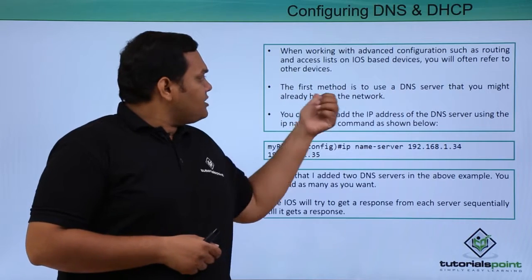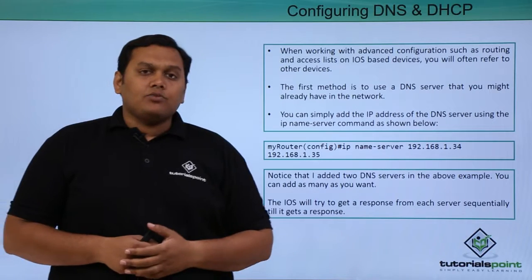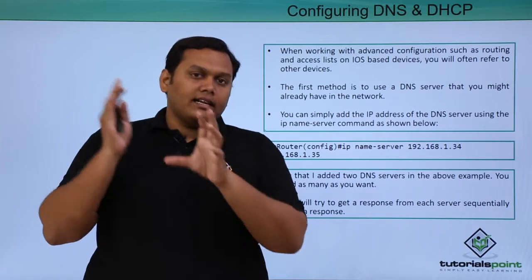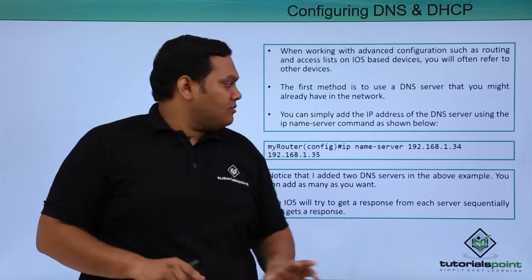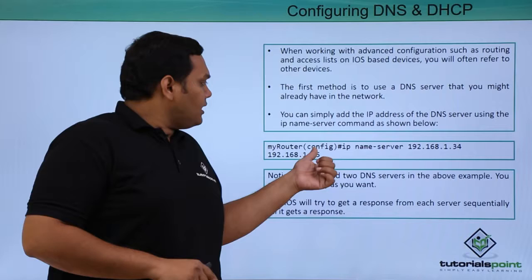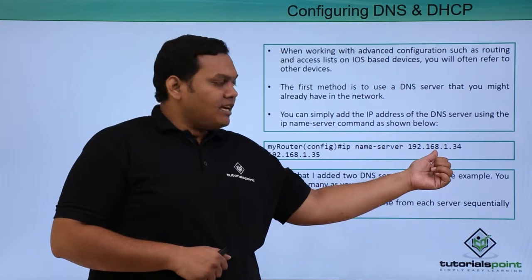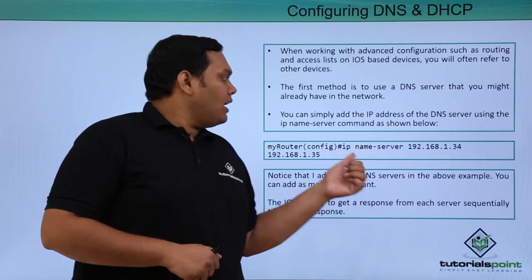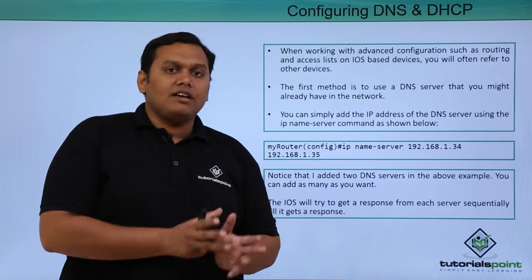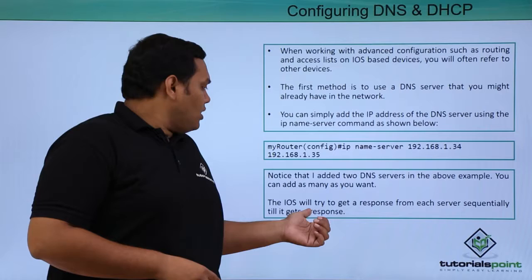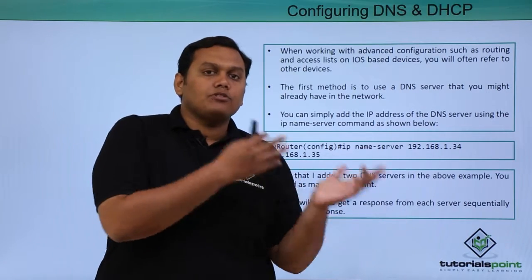The first method is to use the DNS server that you might already have in the network. To configure this, we give the IP address of the DNS server. In the global configuration mode, we enter: ip name-server 192.168.1.34 and also 192.168.1.35. You can give as many DNS servers as are available in the network, and IOS will try to get a response from each server sequentially.